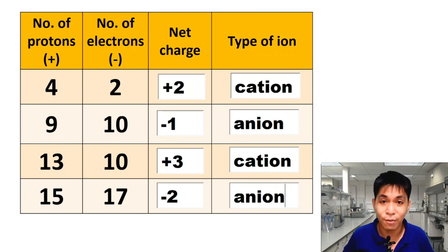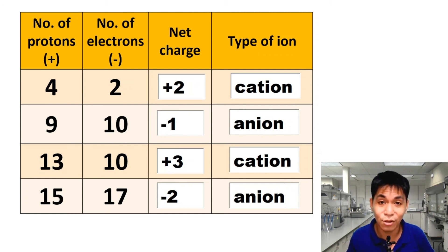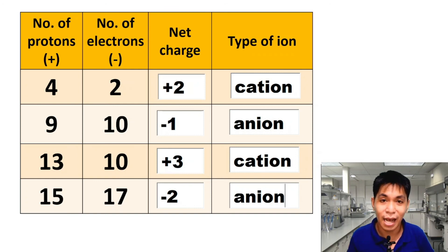If the number of protons and electrons are not the same, we don't have a neutral atom but an ion. Ions are classified into two types: cations (positive) and anions (negative).